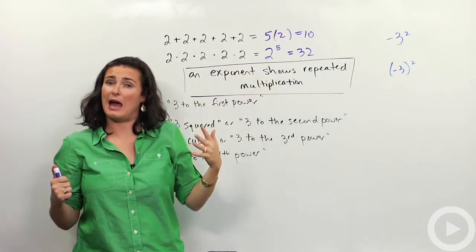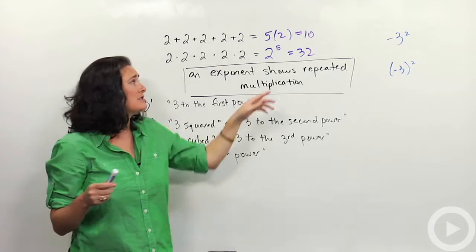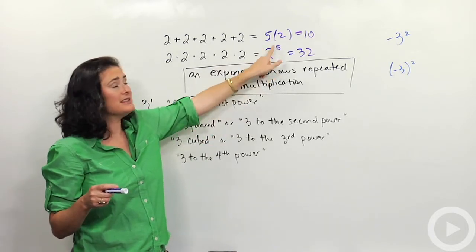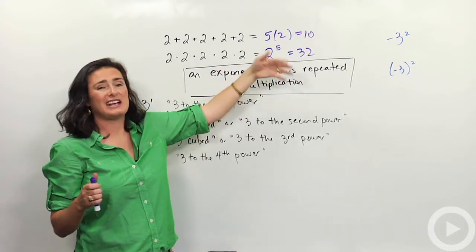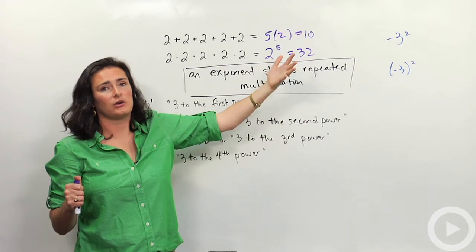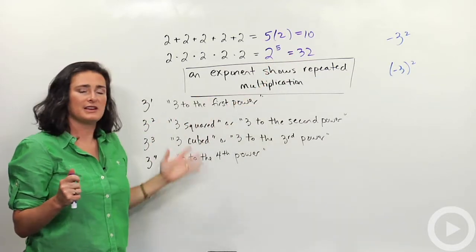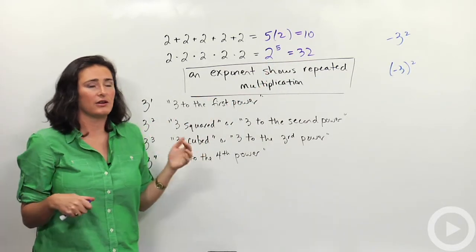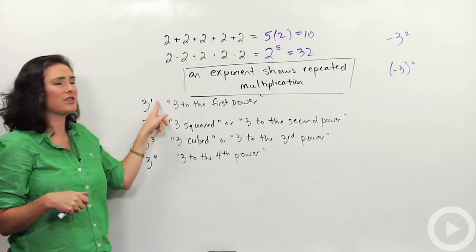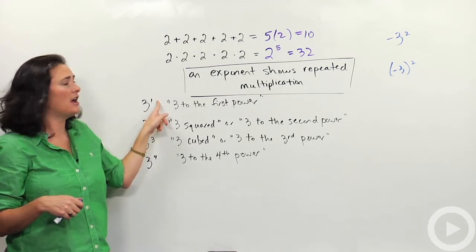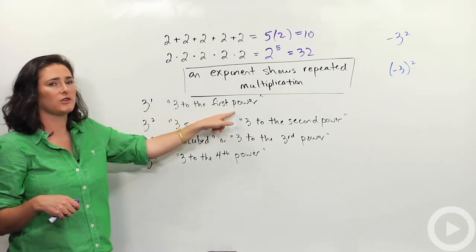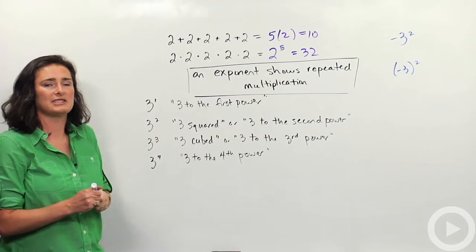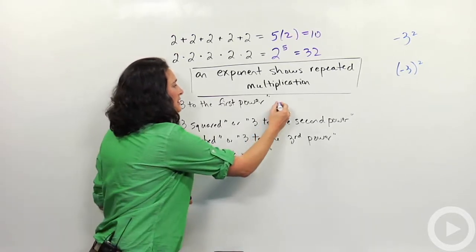Some of the vocabulary that goes along with it is as follows. This 2 is called the base. 5 is called the exponent or the power. I've put up some different examples and how you would say them aloud. For example, if I have 3 with the 1 right there, I would call that 3 to the first power — 3 times itself one time. That's just 3.